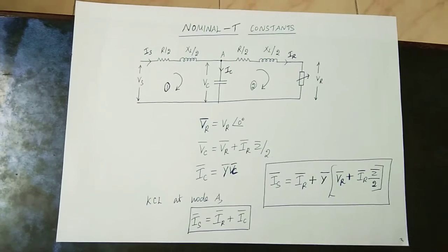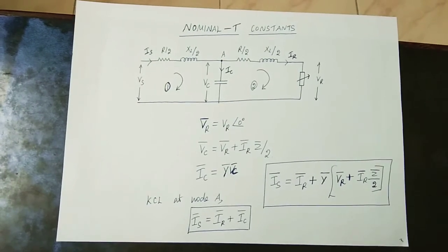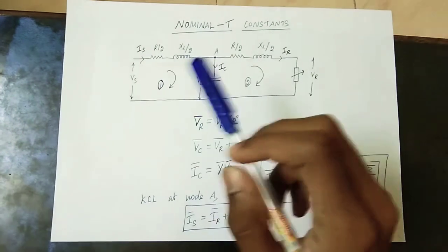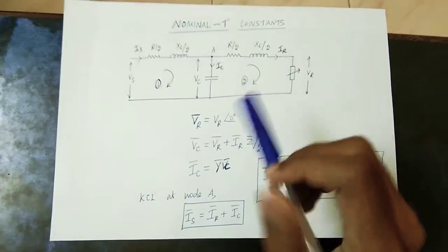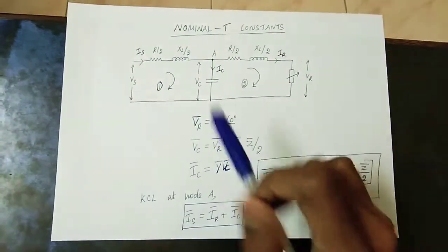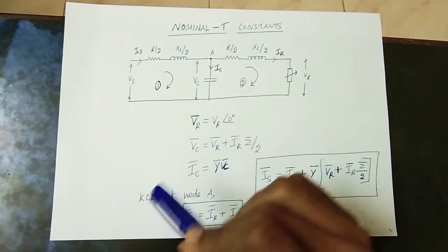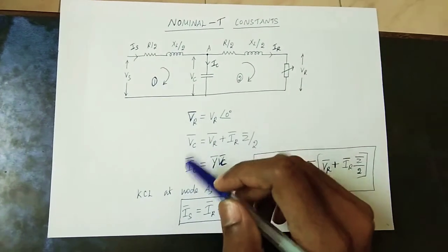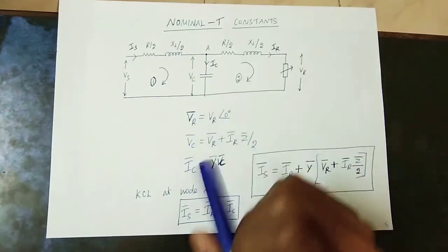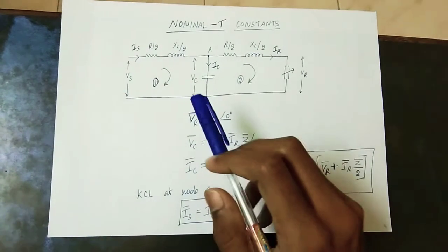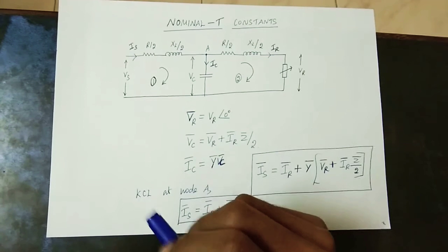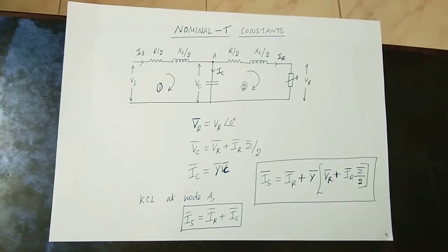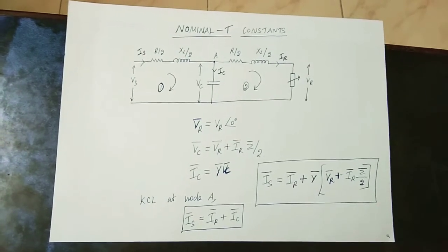We will see a T model with a Medium Transmission Line. In the center, there is a capacitor. On the side, we will place the line impedance — half on each side — and the capacitor. We will see the equations in this same video.